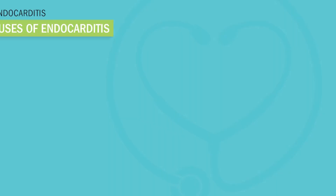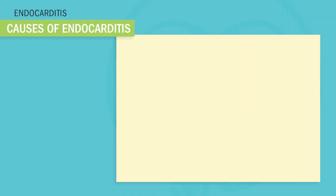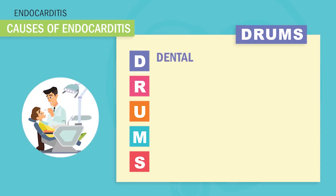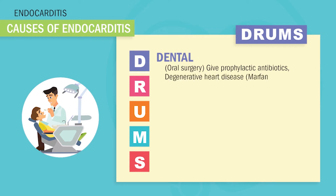So the easy way to remember all the main causes — use our acronym DRUMS, because your heart kind of acts like a drum. D is for dental or oral surgery, where we give prophylactic antibiotics, and also degenerative heart disease called Marfan syndrome.